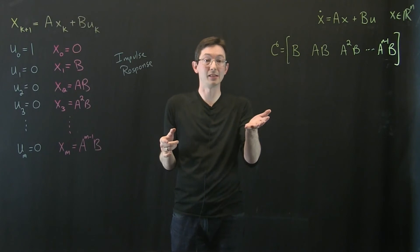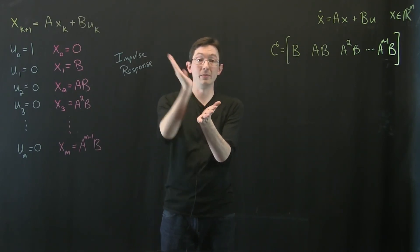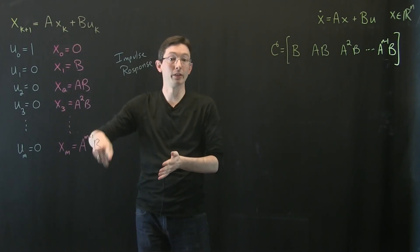Okay there will be some states in Rn that are just not controllable. They'll be perpendicular to the space that can be hit with control.